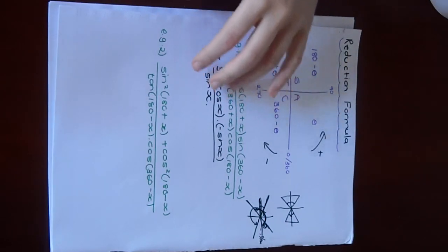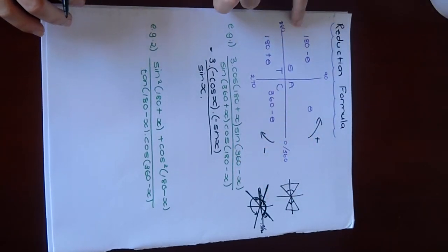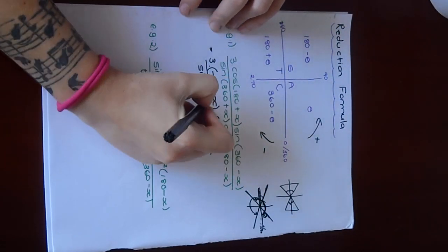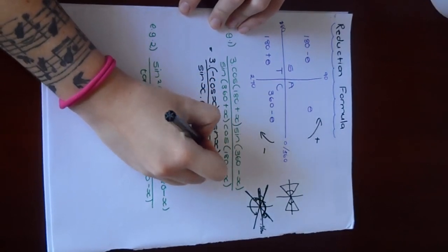Last one is 180 minus theta. Where's 180 minus theta? Over here, in the second quadrant. That makes cos negative, because sine is positive. This is negative cos of X.